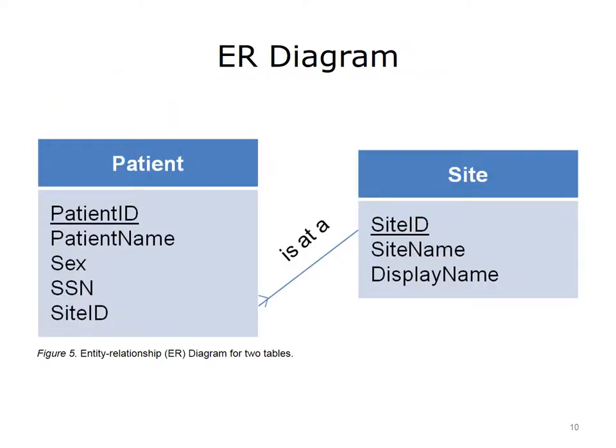This slide shows an entity relationship, or ER, diagram of the two tables. There is a relationship between patient and site by means of the site ID field in both tables. This is a one-to-many relationship. A patient is at only one site, but there may be multiple patients at a single site, and may be described as "is at a."